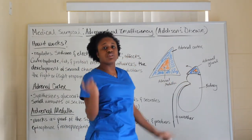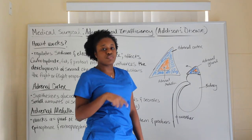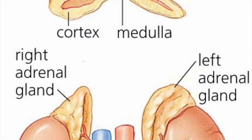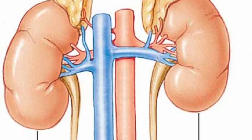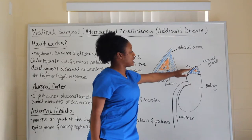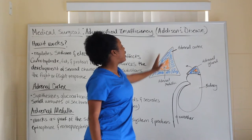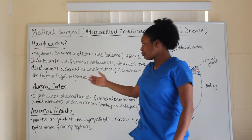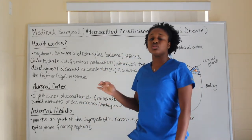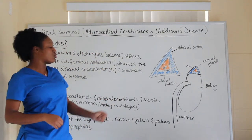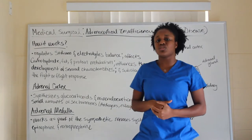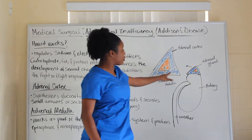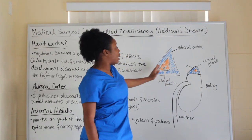The adrenal gland sits on top of each kidney, so you have one adrenal gland on each kidney — two total. The adrenal gland has two layers: the outermost layer is your adrenal cortex, which helps to synthesize glucocorticoid steroids as well as mineralocorticoids, and also secretes small amounts of sex hormones known as androgen and estrogen.